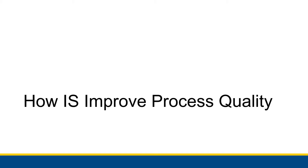Hey everyone! In this video we are going to talk about how information systems can improve process quality. In the last video we were talking about the different types of processes, the different scopes of processes, and the information systems associated with the different scopes. The goal of an information system is to actually improve the process that it is assisting, and that's what we're going to talk about — it's going to be a pretty brief discussion.